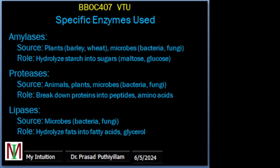Lipases — the main source is microbial sources like bacteria and fungus. The role of lipases is in catalyzing the hydrolysis of fat into fatty acids and glycerol, contributing to flavor development and shelf life extension in dairy processing. It is also used in baking and cheese ripening. So the main role is to hydrolyze fats into fatty acids and glycerol.